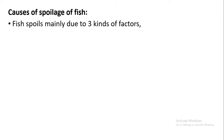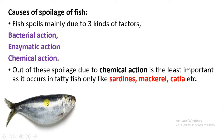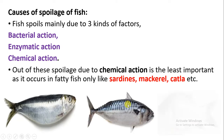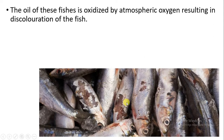So what are the causes of spoilage of fish? There are three kinds of factors: bacterial action, enzymatic action, and chemical action. Out of these, the chemical action is the least important and it occurs in some of the fatty fishes like sardines, mackerel, and katla. As we know there is oil present in these fish, and the oxidation of the oil takes place, due to which there is discoloration of the fish.